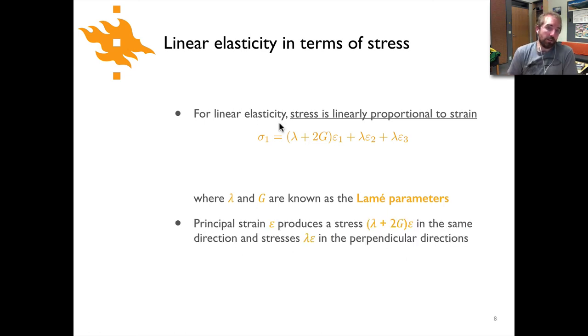We could restate what's shown here in simple terms and say that the principal strain epsilon produces a stress that is lambda plus 2G times epsilon in the same direction and stresses of lambda times epsilon in the two perpendicular directions. That's just basically restating what this equation says here.